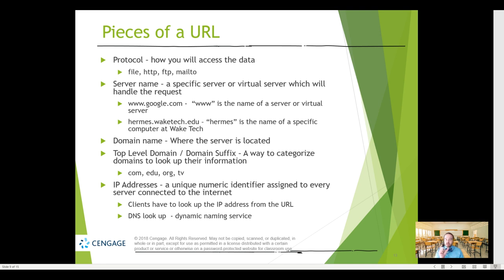That word version is easy for humans to read, but in order for computers to do anything with it, they have to convert it to a unique identifier called an IP address. When we look up the IP address from the domain name, that's called a DNS lookup. DNS is Domain Naming Service — the ability to give a human-readable name to an IP address (internet protocol address), so that everybody agrees there is one and only one www.google.com.